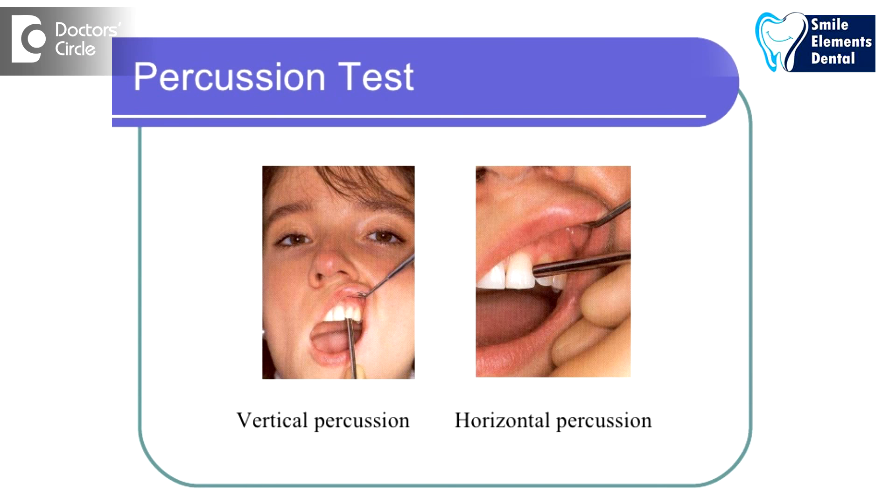Failing root canal can usually be diagnosed by either subjective or objective clinical symptoms, clinical investigations, and radiographs. We do see patients come in complaining of pain with a previously treated root canal. We check the history of the root canal and perform certain clinical tests — checking if pocket depth is increasing, doing a percussion test where we tap the tooth, followed by x-rays.